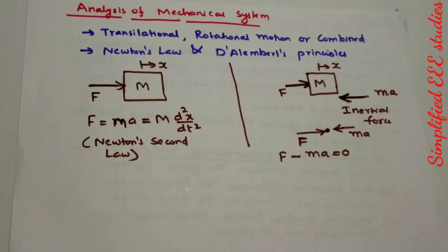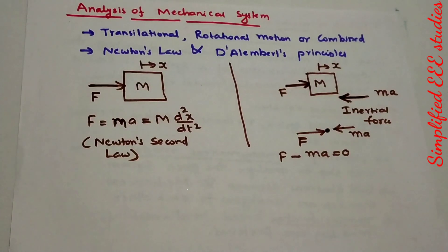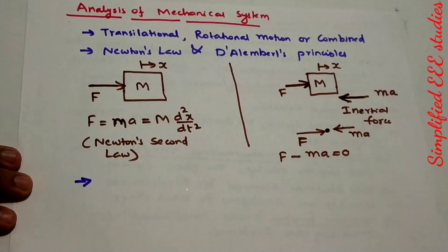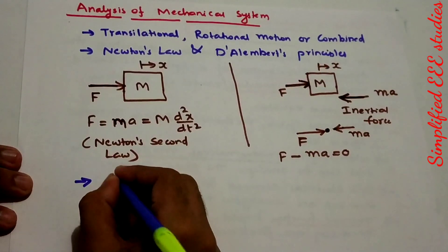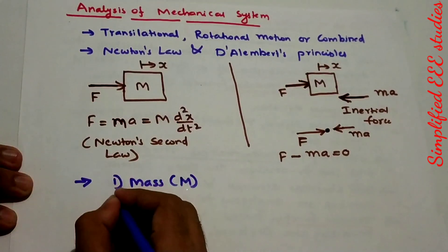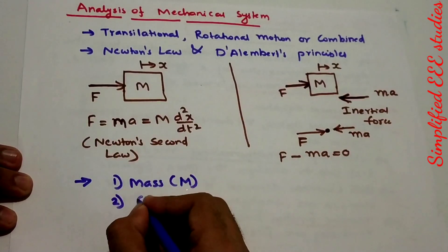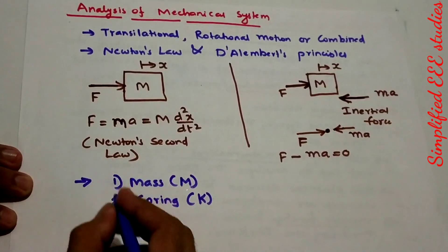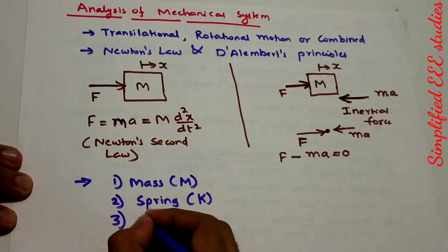While doing mathematical modeling of control engineering, the following elements are mainly involved. You need to have basic knowledge on these elements. The first element is Mass. The second element is Spring, usually denoted by K as the spring constant. And the third one is Friction.